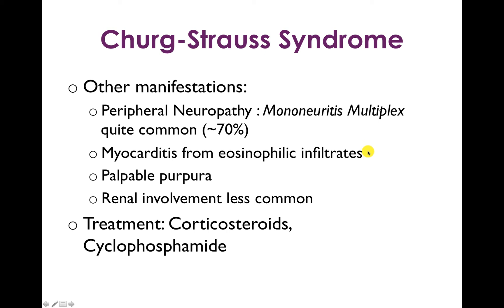Patients can develop myocarditis in about 15% of cases, from eosinophilic infiltrates in the myocardium. Palpable purpura may be present, and renal involvement is less common with this disease than the other two ANCA-associated vasculitides, but it can still occur. Treatment is corticosteroids and cyclophosphamide.